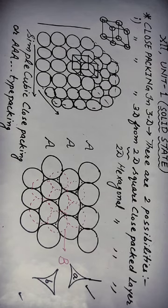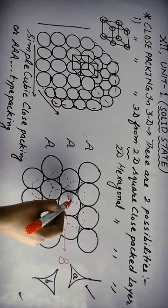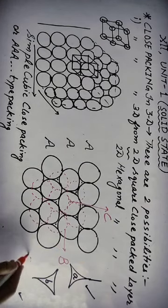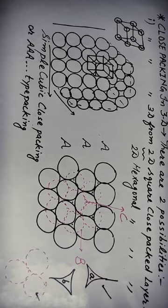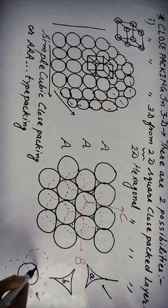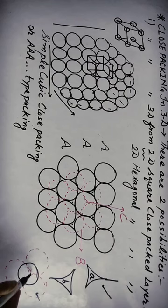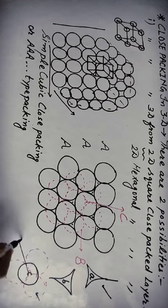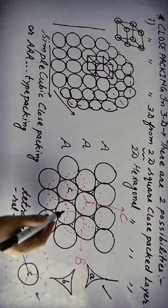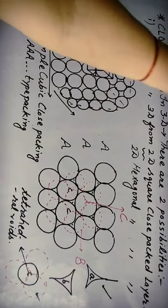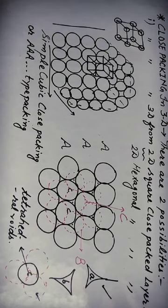When we carefully observe, two new types of voids are generated. One void is labeled C — this is the tetrahedral void, formed between one sphere of the lower layer and the surrounding spheres of the upper layer. It is called a tetrahedral void because when we join the centers of the four nearest surrounding spheres, the shape formed is a tetrahedron. A tetrahedral shape is formed by joining the centers of the nearest four spheres.